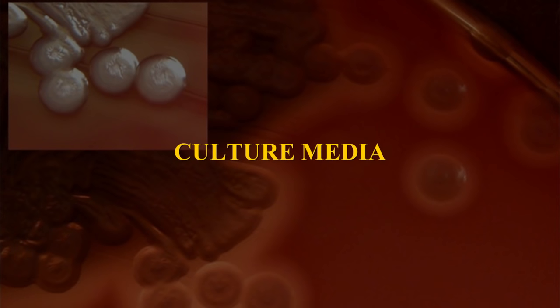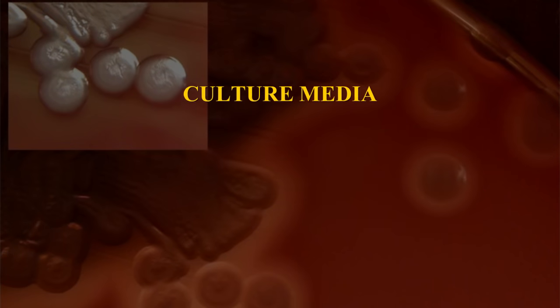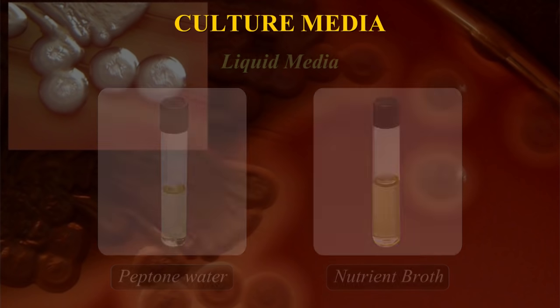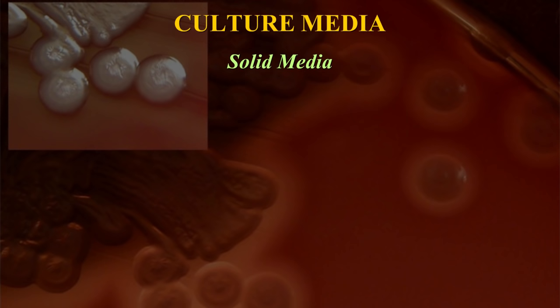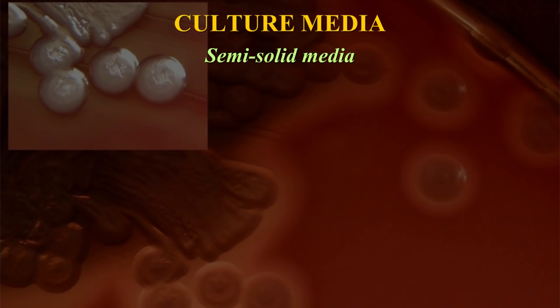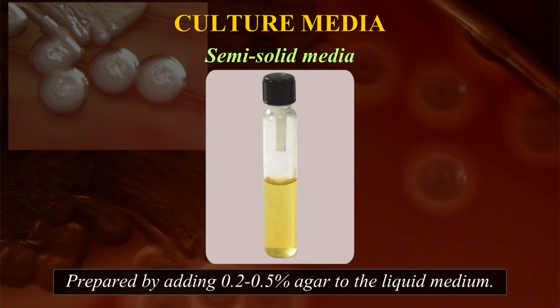Culture media can be broadly divided into two major groups. Liquid media such as cotton water and nutrient broth, and solid media such as blood agar, which is prepared by adding 1–2% agar to the liquid media. Besides these two, semi-solid media are also used, which are prepared by adding 0.2–0.5% agar to the liquid medium.